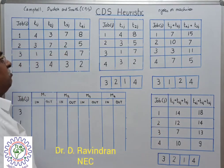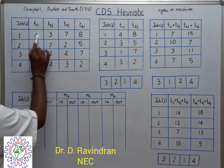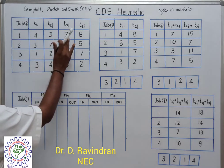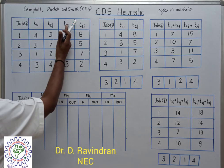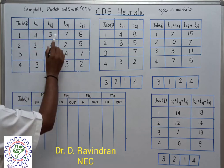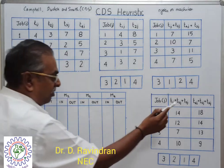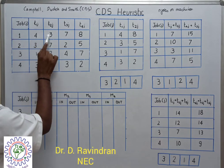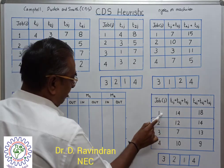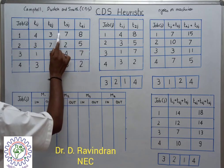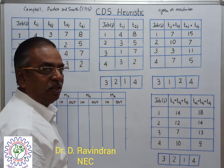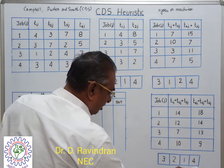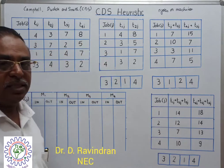In the third step, the processing times of the first machine, second machine, and third machine are combined together. Then the last machine, last but one, and the machine before that are also combined together. For example, for job 1, the first imaginary machine is 4 plus 3 plus 7 equals 14, and the second imaginary machine is 8 plus 7 plus 3 equals 18 hours. We form this table and predict a sequence based on Johnson's algorithm.